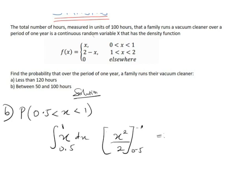Then this is just 1 squared over 2 minus 0.5 squared over 2, which is going to give me if you press your calculator 0.375.